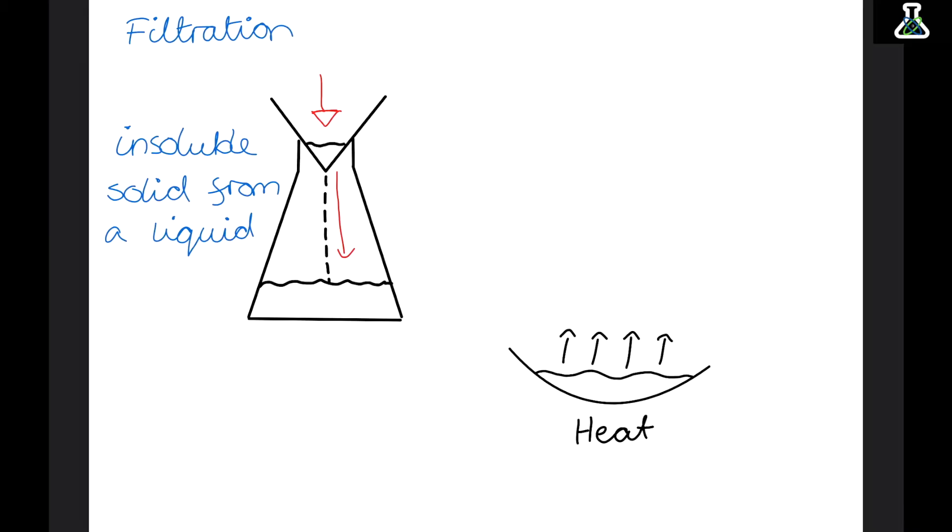So it stays at the top and is collected as the residue. The liquid then falls through the paper and goes into a flask where it is collected as the filtrate. So now we have the pure liquid without any of the solid in it.